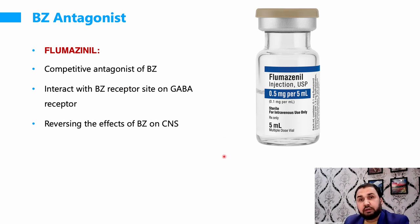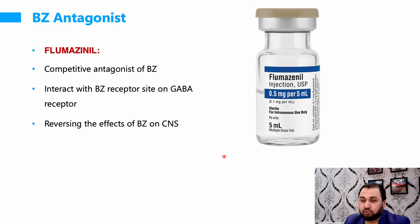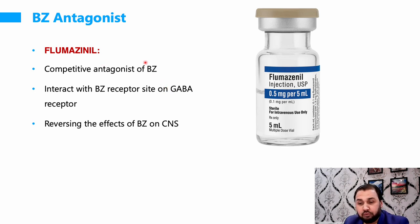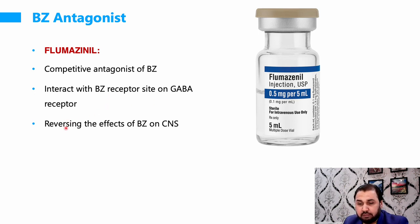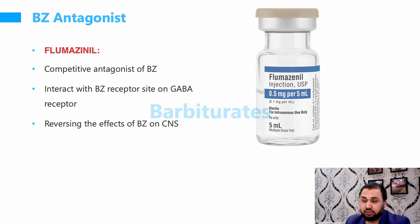If somebody develops severe benzodiazepine toxicity, flumazenil is the antidote. It is a competitive antagonist of benzodiazepine — it binds to the same receptor site on the GABA receptor and reverses the CNS effects of benzodiazepines. It acts directly at the benzodiazepine receptor site on the GABA receptor to reverse the effects.